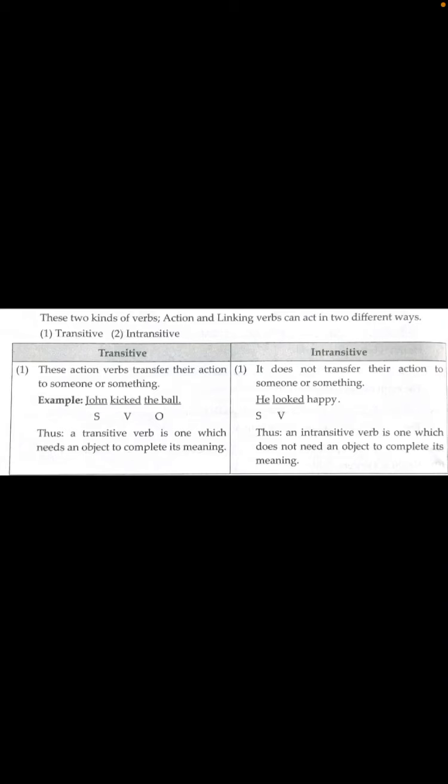Action verbs and linking verbs can be in two different categories: transitive and intransitive. So these two kinds of verbs — action and linking — can act in two different categories: transitive and intransitive. Now, what is a transitive verb?